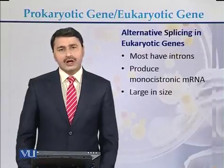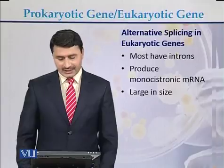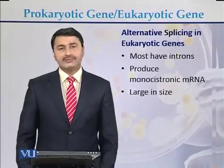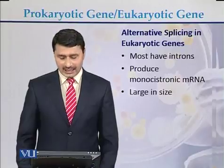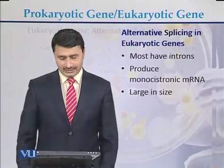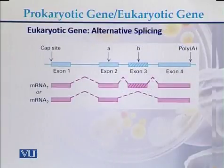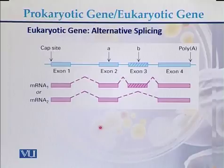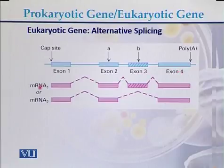Most eukaryotic genes have alternative splicing, most have introns, and they produce monocistronic messenger RNA. Most eukaryotic genes are large in size. Alternative splicing is a phenomenon seen in eukaryotic genes. Looking at a gene sequence, we can see exon 1, exon 2, exon 3, and exon 4.